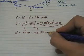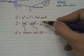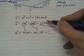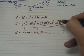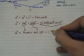665 squared is 442,225. And then 2 times 300 times 665 times the cosine of 15 is 385,404.